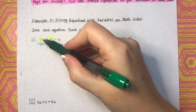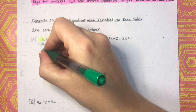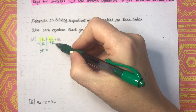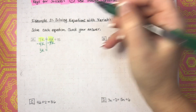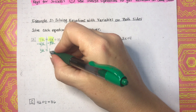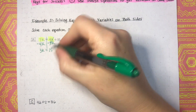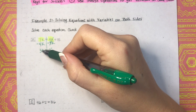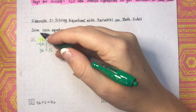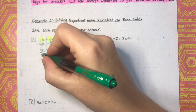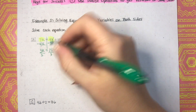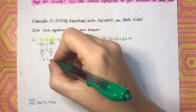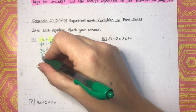7k minus 4k is 3k, equals 4k minus 4k which is 0, plus 15. So that cancels on this side and we bring down 15. We're trying to get k by itself. This is 3 times k, so we use the inverse operation of multiplication — divide both sides by 3. We end up with k equals 15 divided by 3, which is 5. So k equals 5.